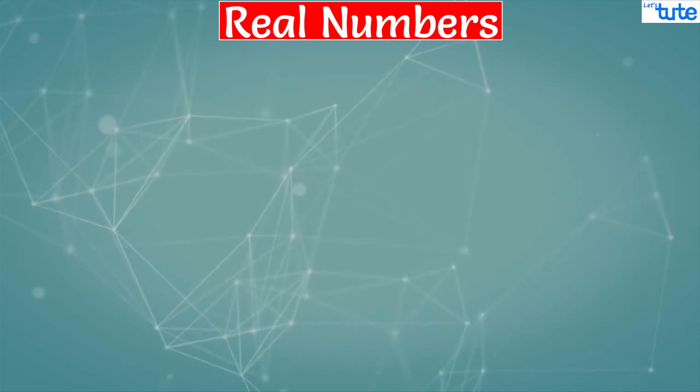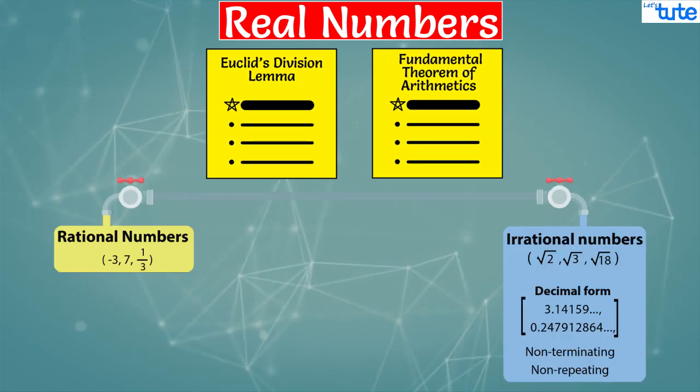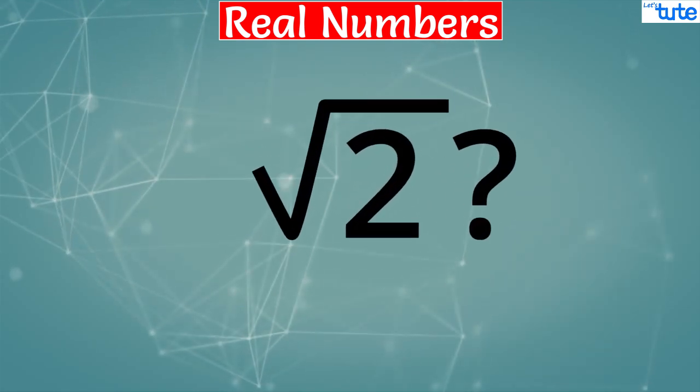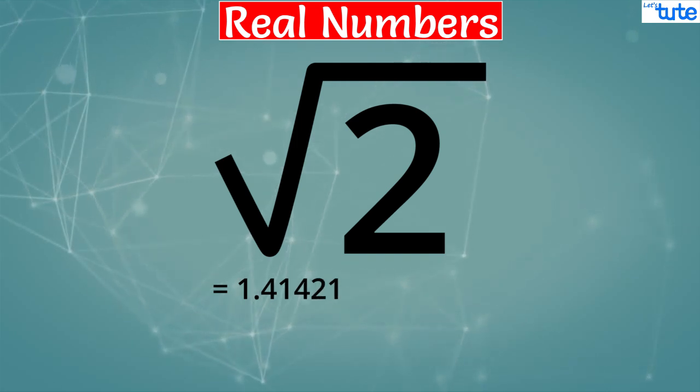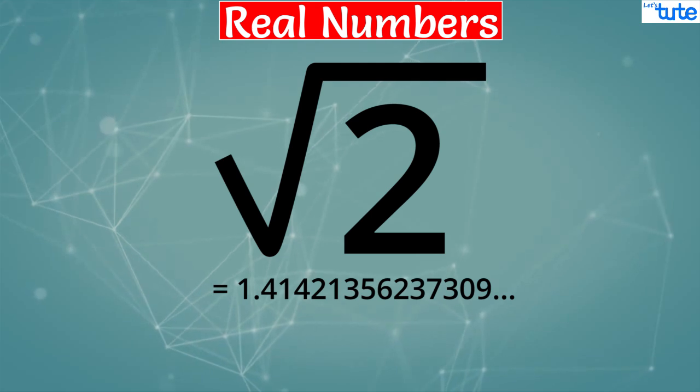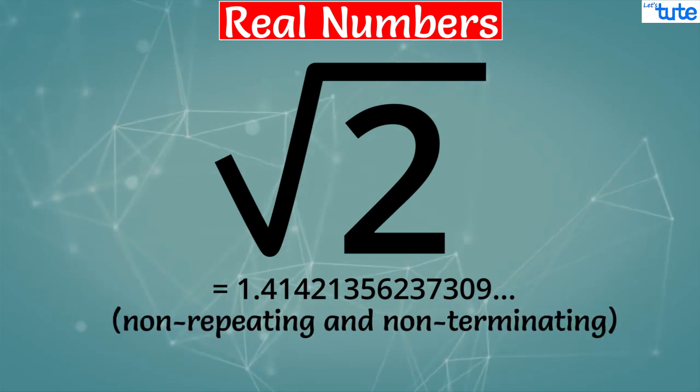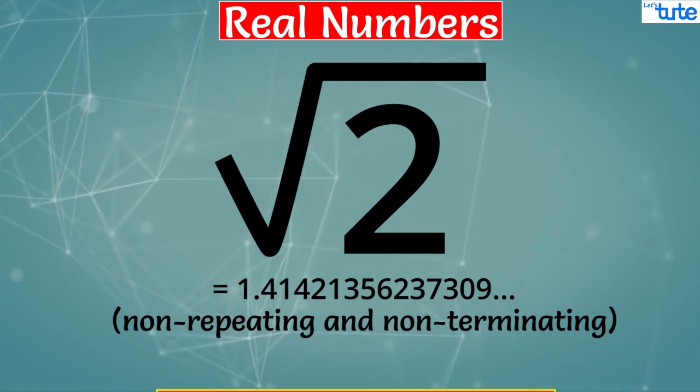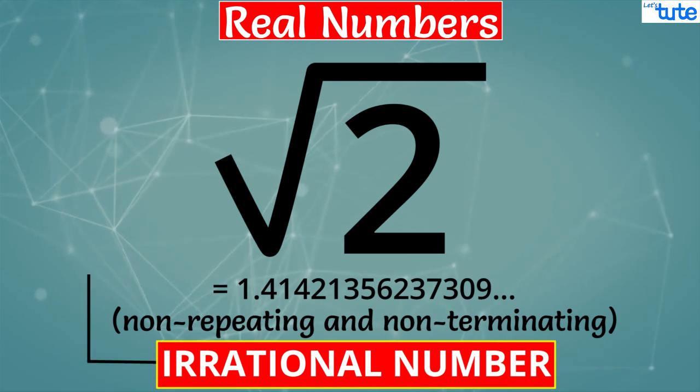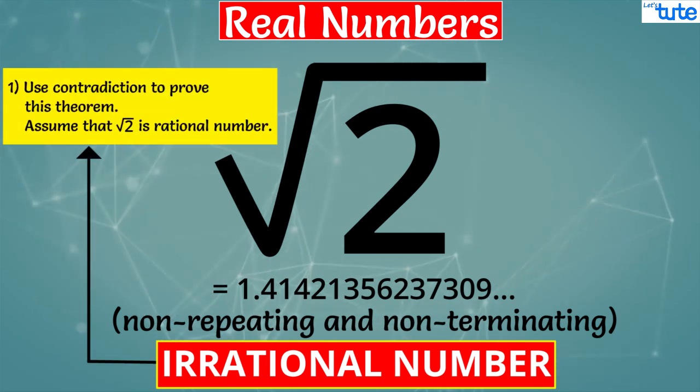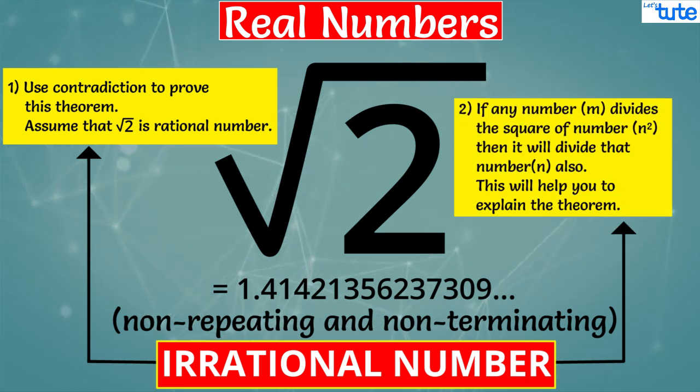Now friends, we have already seen two theorems and have learned about rational and irrational numbers. So what do you think, root 2 is a rational number or an irrational number? Decimal value of root 2 is 1.41421356237309, which is non-repeating and non-terminating. And the numbers which are non-terminating and non-repeating are called irrational numbers. So we know that root 2 will be an irrational number. But when we have to prove this with the help of a theorem, we have to remember two important points. First, we are going to use contradiction to prove this theorem. That is, first we will assume that root 2 is a rational number. If any number divides the square of a number, then it will divide that number also. This will help you to explain the theorem.